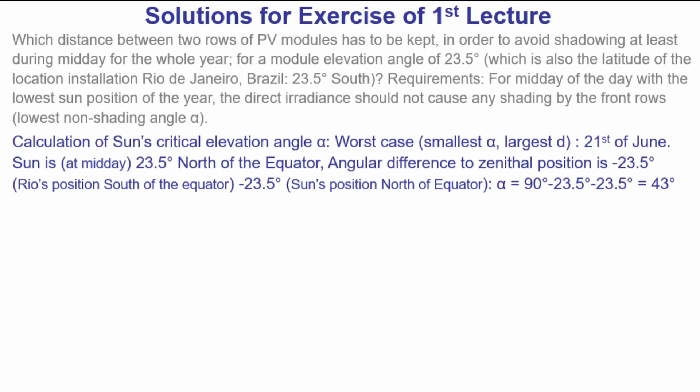So additional angular distance of 23.5 degrees. And we have then 90 degrees minus 23.5 degrees minus 23.5 degrees, that's 43 degrees. So our alpha is 43 degrees.